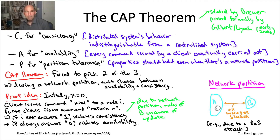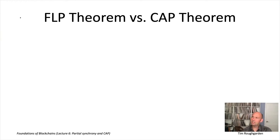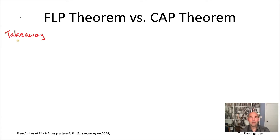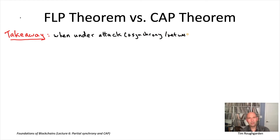So ultimately, the takeaway from the CAP theorem: step one, decide whether or not network partitions are important for your application. If they're not, demand both consistency and availability. If you are worried about network partitions, know that you have to choose between C and A, and make a smart decision based on your application. To wrap up lecture six, let me answer the question of what's the difference between these two famous results: the FLP impossibility result and the CAP theorem.